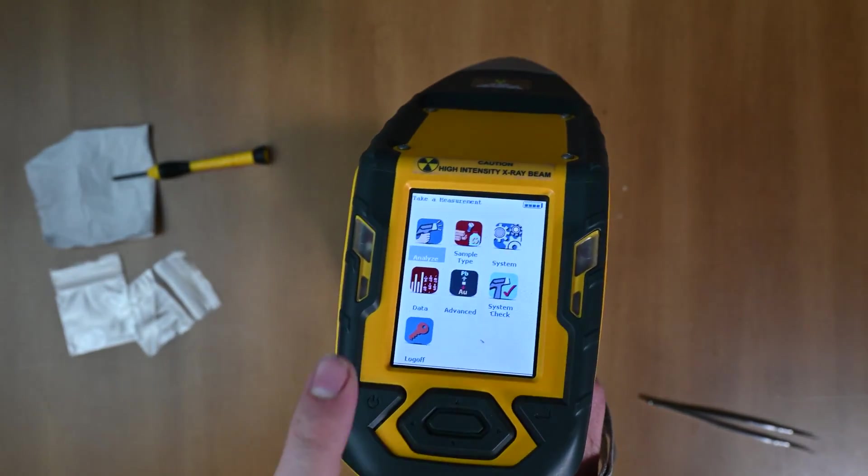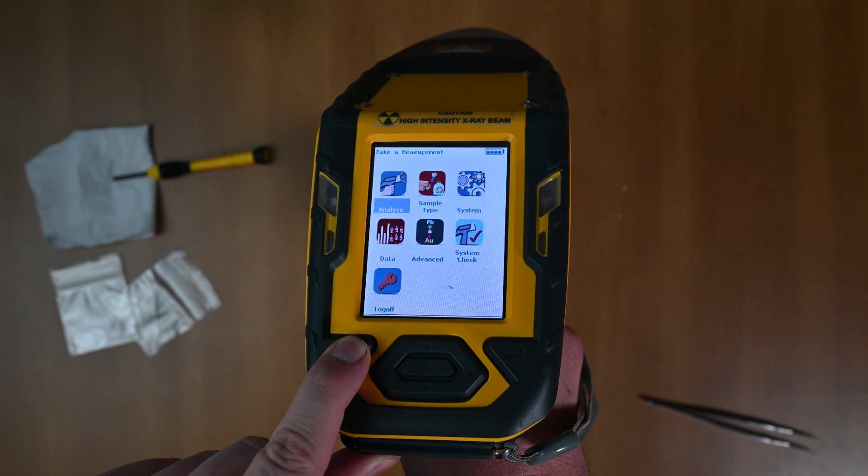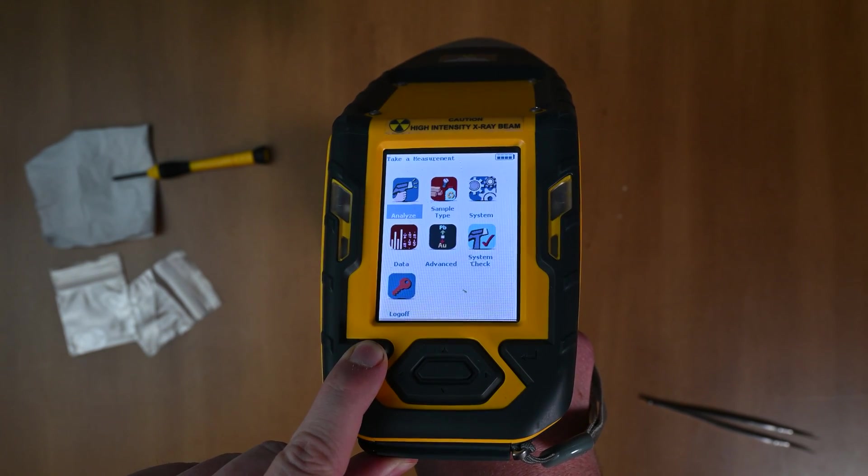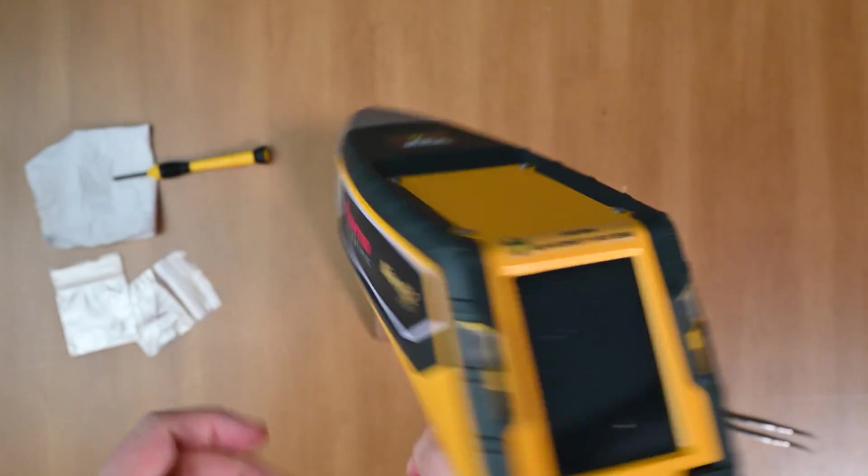First, grab your Niton XL2 and we're going to want to make sure our analyzer is off. We're going to press and hold the power button on the left hand side as seen here. The screen eventually will just turn off. Now your analyzer is powered down.